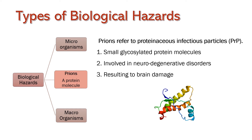Another category is prions, also known as protein molecules. They are small protein molecules found in brain cell membranes and create spongiform pathological changes in the brain, resulting in brain damage.